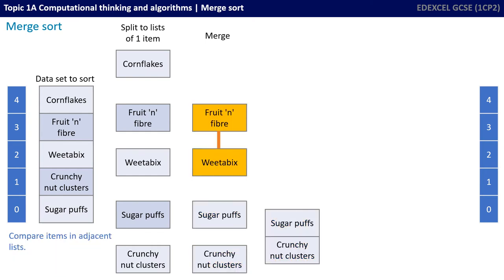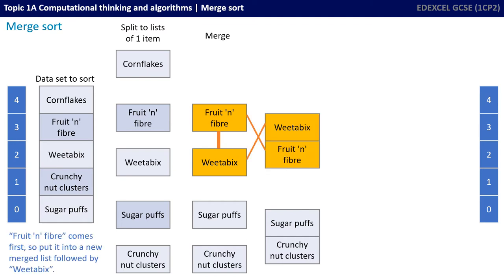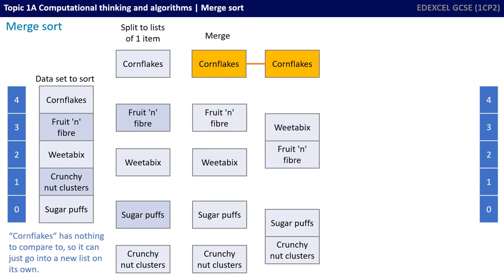We repeat the process and compare items in adjacent lists. Fruit and fibre comes first, so we put it into a new merged list, followed by Weetabix. Cornflakes has nothing to compare to, so it can just go into a new list on its own.